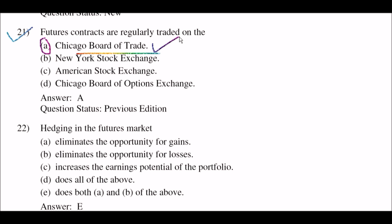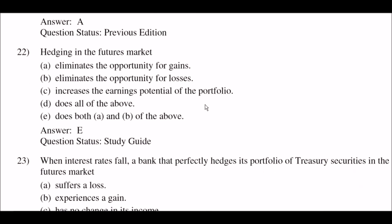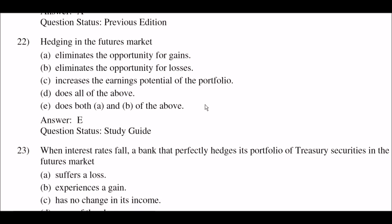Next question: hedging in the futures market — option A: eliminates the opportunity for gains; option B: eliminates the opportunity for losses; option C: increases the earning potential of the portfolio; option D: does all of the above; option E: does both A and B of the above. The right answer is option E: both A and B. Hedging in the futures market eliminates the opportunity for gains and eliminates the opportunity for losses.